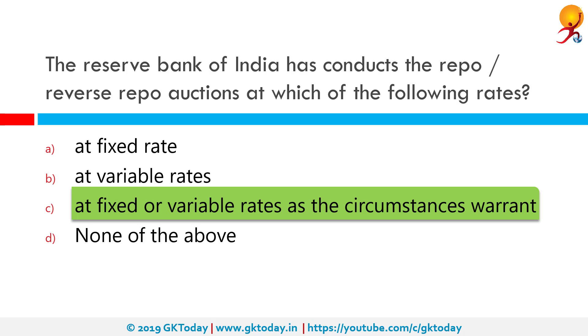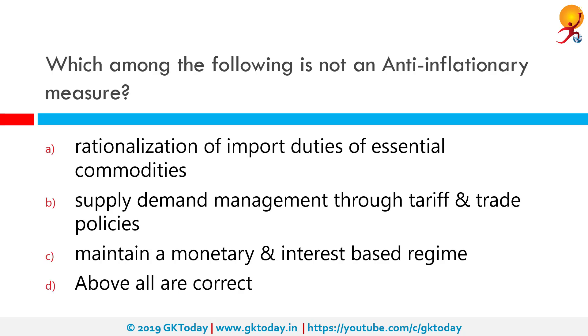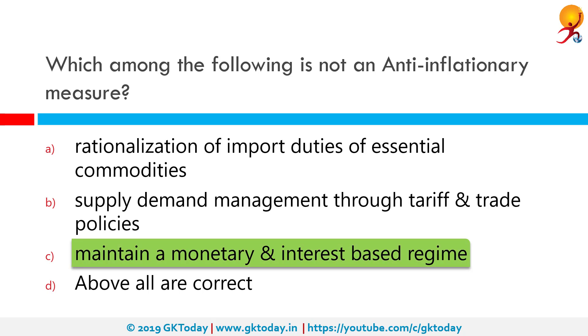The reverse repo auction is performed to remove excess cash from the banking system. Which among the following is not an anti-inflationary measure? The correct answer is to maintain a monetary and interest-based regime.